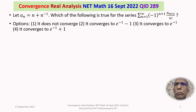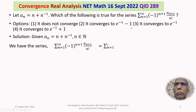We now discuss the solution of the problem in detail. We are given aₙ = n + n⁻¹ where n belongs to the set of natural numbers. We have the series sigma n=1 to infinity of (-1)^(n+1) * aₙ₊₁, where aₙ₊₁ = (n+1) + (n+1)⁻¹.